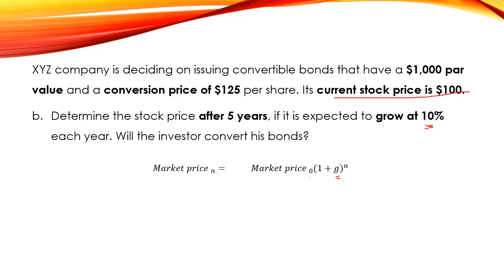So the market price at period five will be equal to 100 times (1 + 10%) to the power 5. The market price after five years will be equal to $161.05.